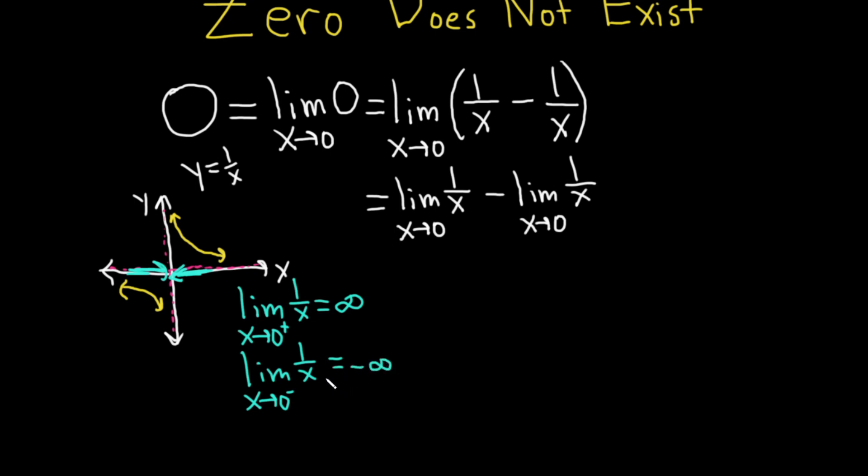In this case the limit also does not exist, except we write negative infinity because it's the more descriptive option. So whenever you write infinity and negative infinity, those limits still don't exist, it's just we're being more descriptive. We're trying to describe the behavior of the function in a better way.